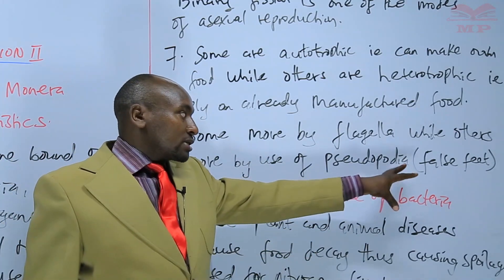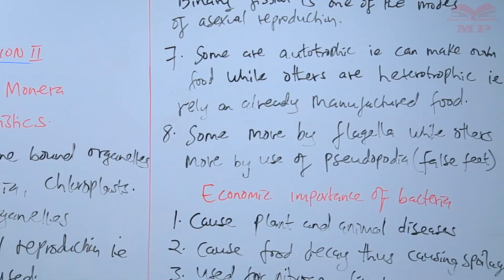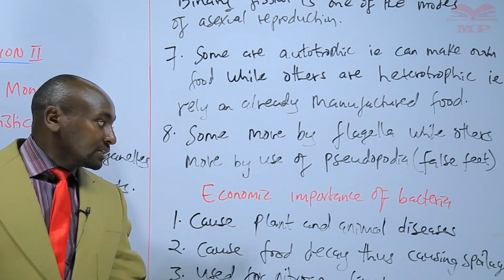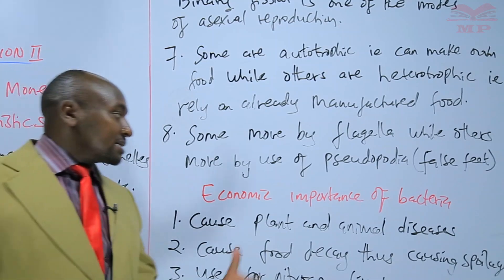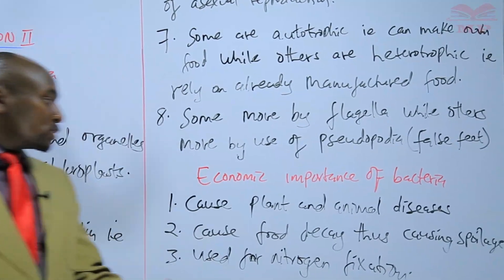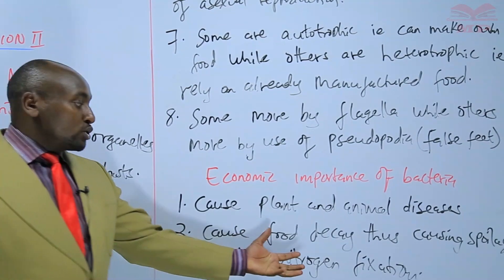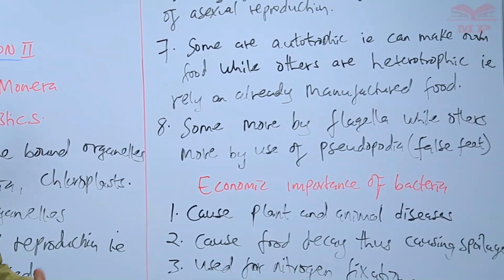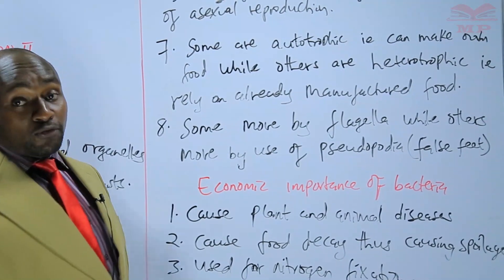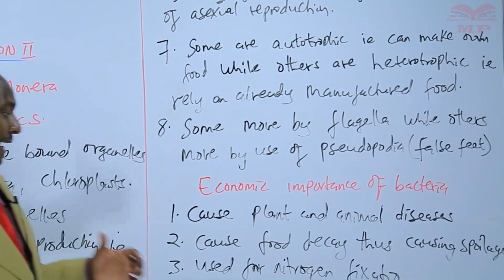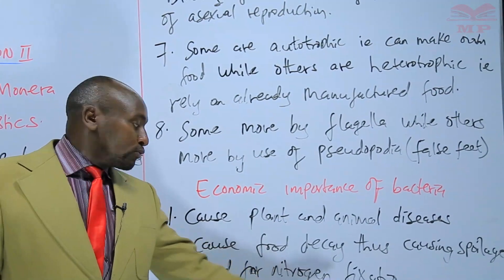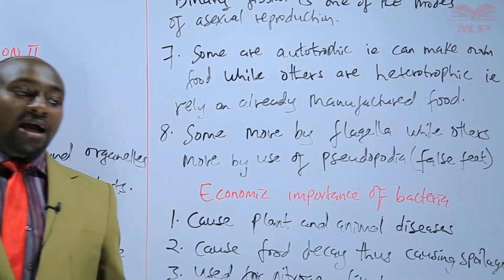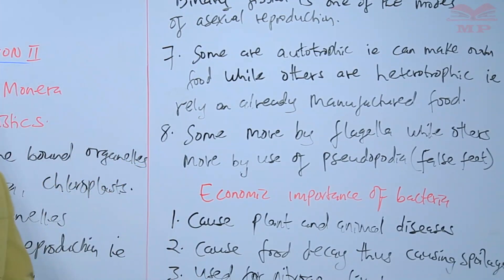We have also looked at the economic importance of bacteria: they cause plant and animal diseases such as cholera and typhoid in humans. They cause food decay, which leads to spoilage of food — that is why food cannot be kept for a very long time because of the bacteria. And finally, bacteria are used for nitrogen fixation, so that nutrients can be added into the soil.